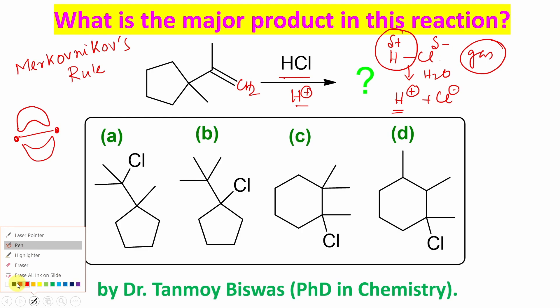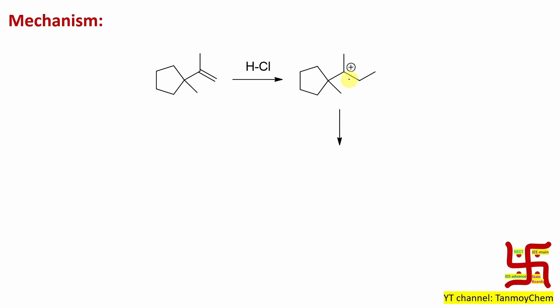Now this H+ will react with this double bond and produce a cationic intermediate. So you can see this mechanism. Now you may ask why H+ added here and not at another position. Here the produced carbocation is a tertiary carbocation.